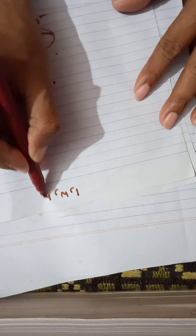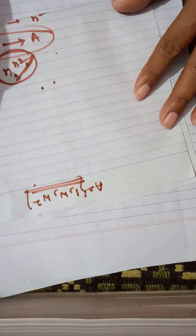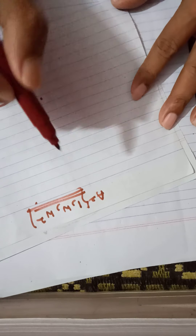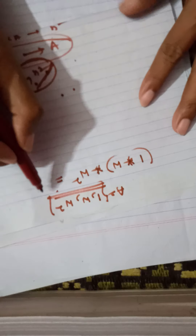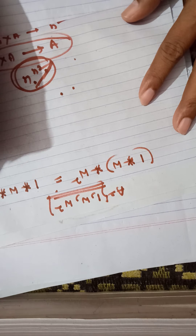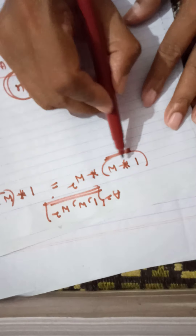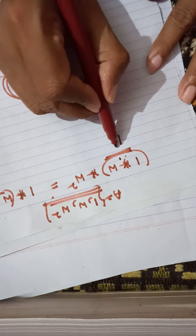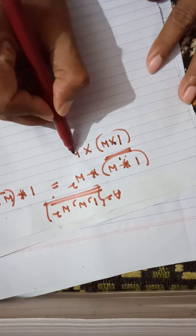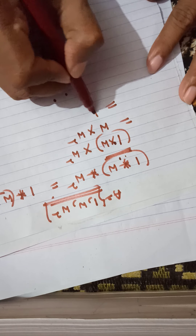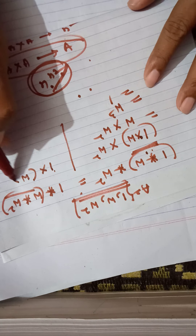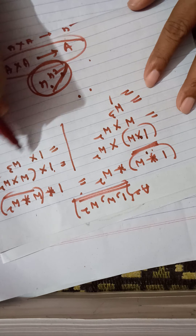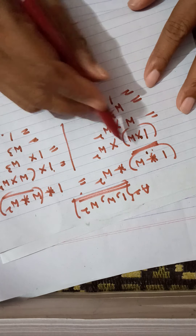Associative property: taking elements 1, omega, omega squared. We verify (1 star omega) star omega² equals 1 star (omega star omega²). Left side: (1×omega)×omega² = omega×omega² = omega³ = 1. Right side: 1×(omega×omega²) = 1×omega³ = 1×1 = 1. Both equal 1, so associative property holds.